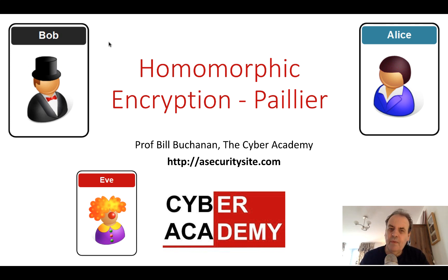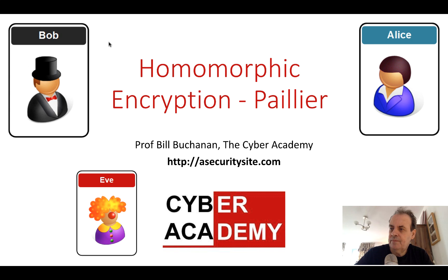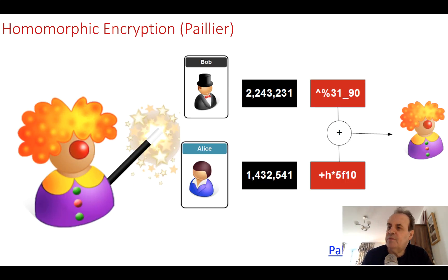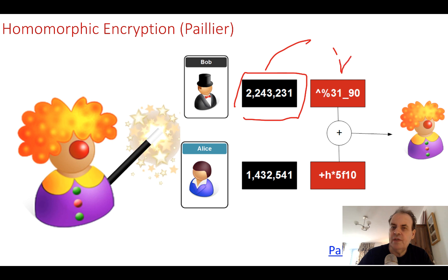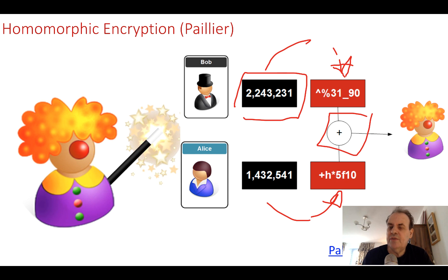Let's look at homomorphic encryption. In this tutorial, I'll show you how to code a method such as the Paillier method in Python to demonstrate how it works. With homomorphic encryption, it's possible to take cipher values — we have our original values and convert them to cipher values. The advantage is that we can actually operate on them; in the case of Paillier, we can do an additive operation and get a result.